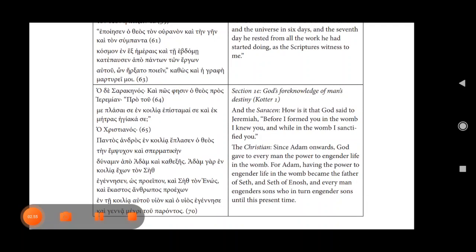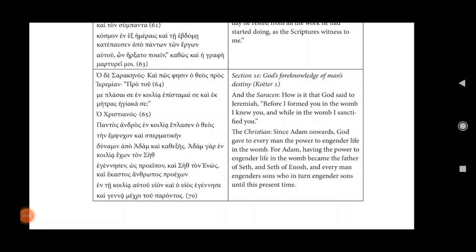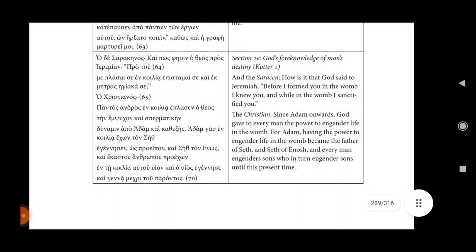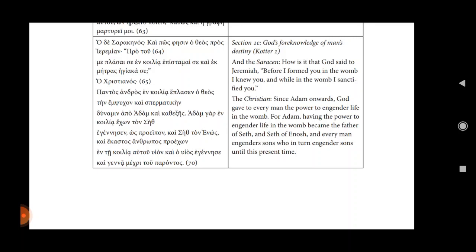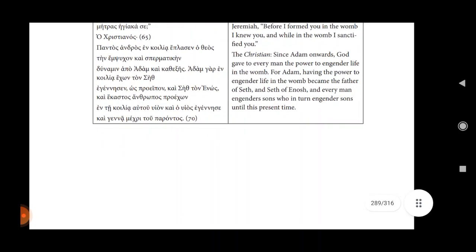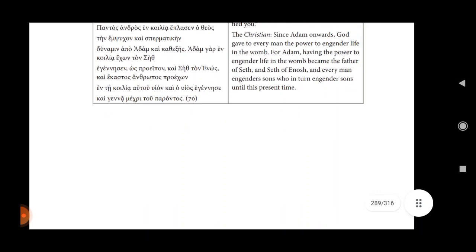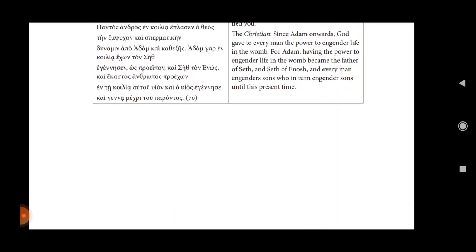Section 1e, God's foreknowledge of man's destiny. Quotar one. And the Saracen: How is it that God said to Jeremiah, Before I formed you in the womb, I knew you, and while in the womb I sanctified you? The Christian: Since Adam onwards, God gave to every man the power to engender life in the womb. For Adam, having the power to engender life in the womb, became the father of Seth and Seth of Enos, and every man engendered sons, who in turn engendered sons until this present time.